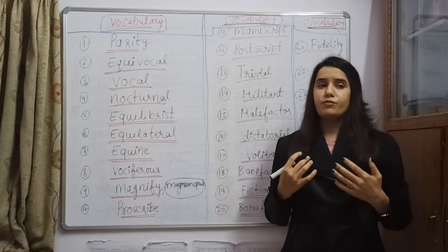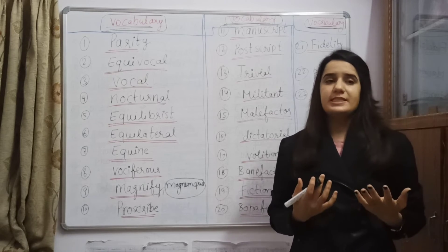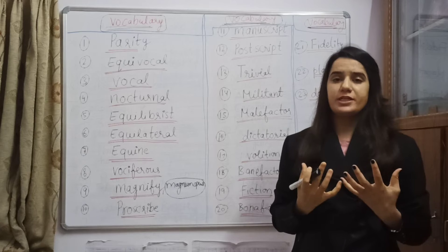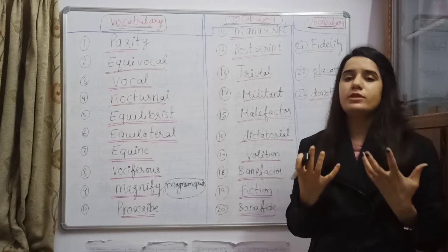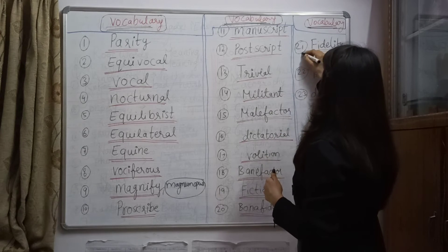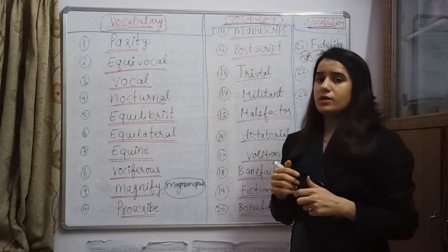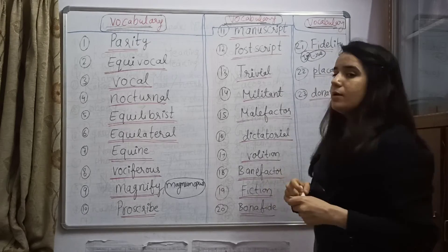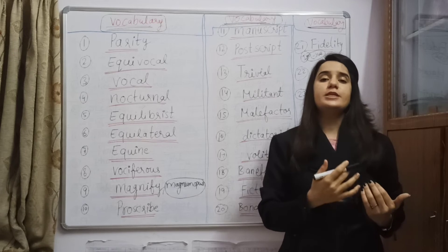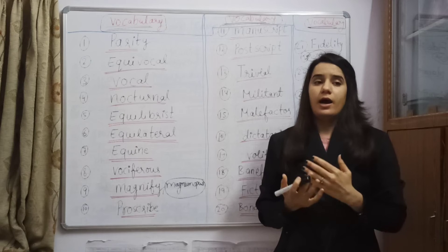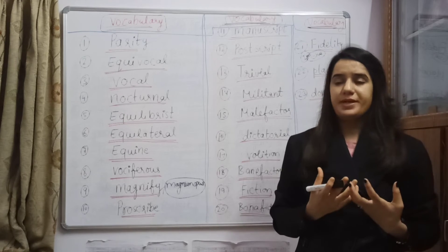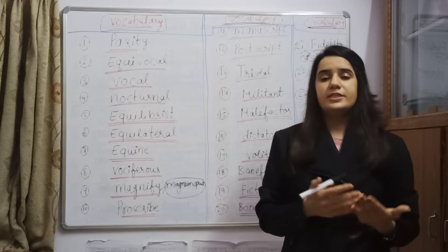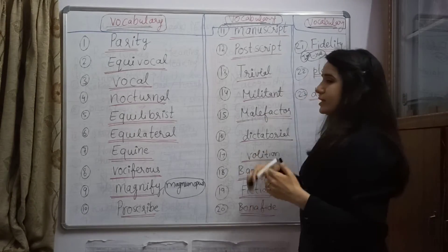Eighteenth is benefactor. Ben means good and factor means to do something, so the one who always does good and has kindness — we will say he is a benefactor. Nineteenth is fiction. Fiction means to make something imaginary, not real — we will say it is a fiction. Twentieth is bona fide. Fide means faith and bono means good — having good faith. Twenty-second is placate. Placate means to change or turn hostility into friendliness — to pacify things. Placate means to turn hostility into friendliness.